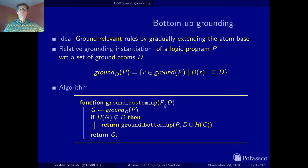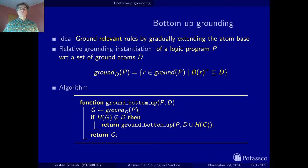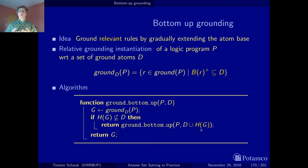What we compute is the ground instantiation of our original program relative to the facts. We get a bunch of rules, and normally these rules produce heads not yet seen in the problem instance — hence not contained in our atom base. We then add them to the atom base and loop, now looking at the ground instantiation with a larger atom base.